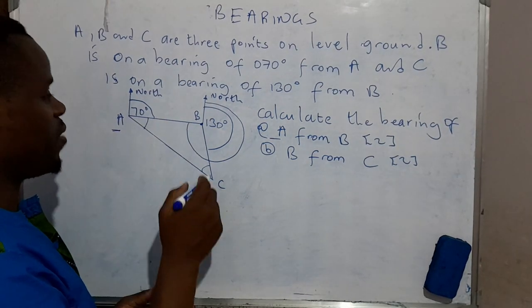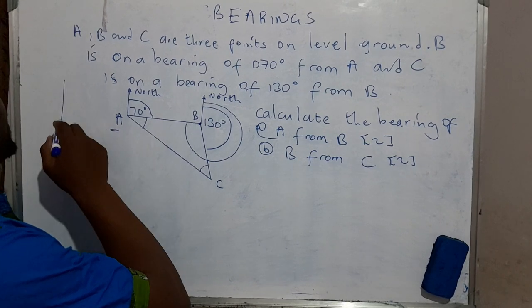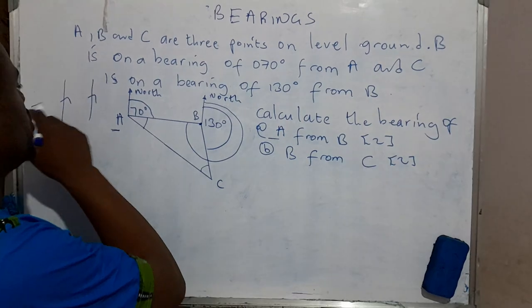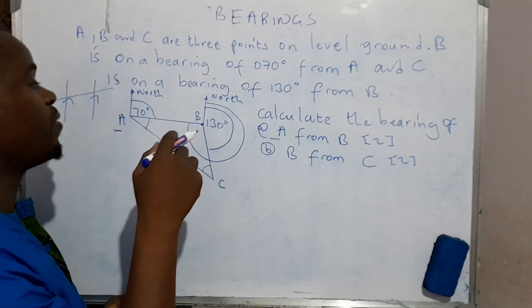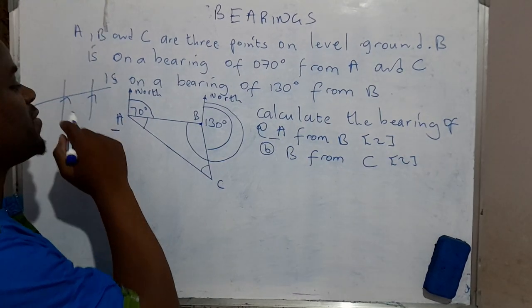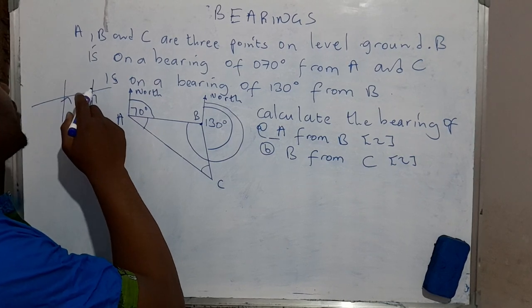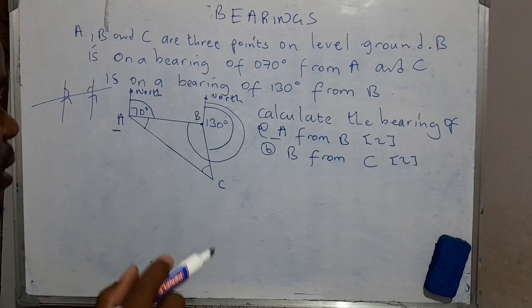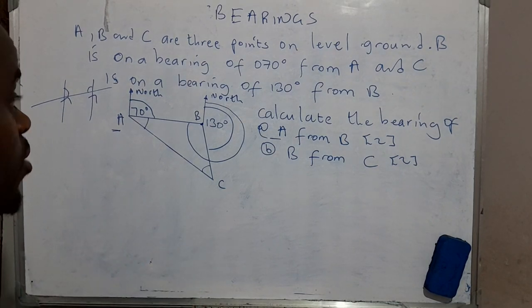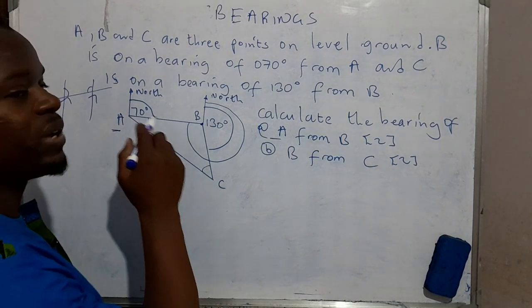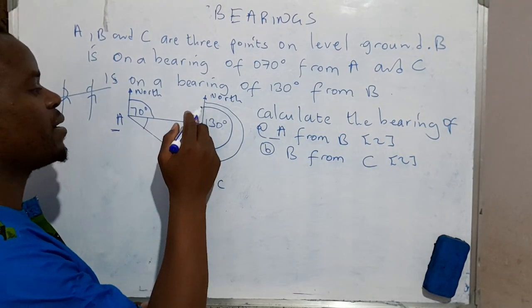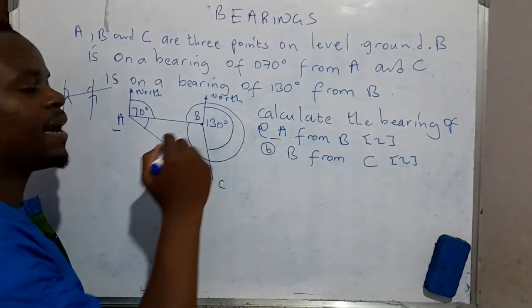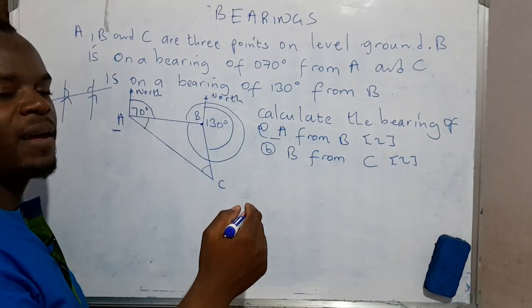We need to realize that when we have a line and another line which are parallel to each other, then we draw a line crossing over them. This one is a transversal. And if you are talking of this angle here and that angle, then we are talking of allied angles. Allied angles add up to 180. So we need to realize that this one and that one are allied angles. They add up to 180. This line and that line are parallel to each other.